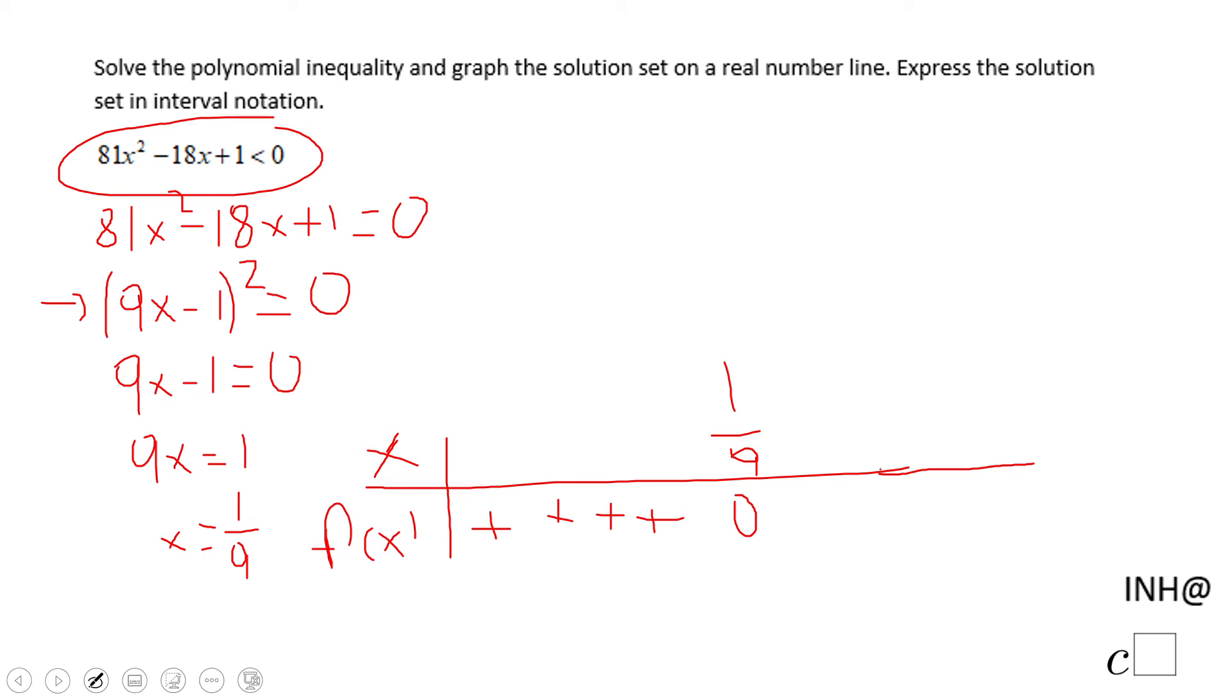If I get a number larger than 1 over 9, like 1, I'm going to still end up with a positive value. This polynomial is only positive or zero, zero at x equals 1 over 9.